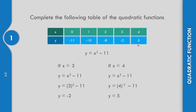These are the table of values. The values of y are negative 11, negative 10, negative 7, negative 2, and positive 5. If we get the ordered pairs, those are (0, negative 11), (1, negative 10), (2, negative 7), (3, negative 2), and (4, positive 5).